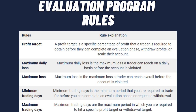Each funding program has specified rules every trader must follow. Profit targets are specific percentages a trader must achieve before completing an evaluation phase, requesting a withdrawal, or scaling a funded account. Phase 1 has an 8% profit target and Phase 2 has 5%, with no profit targets once funded. The maximum daily loss — the maximum loss allowed on a daily basis before the account is violated — is 5% for all account sizes. The maximum overall loss is 12% for all account sizes.